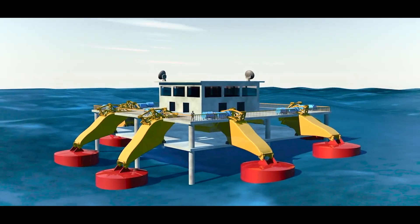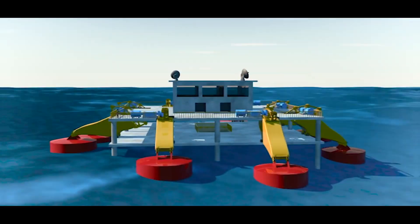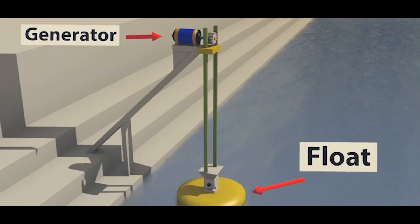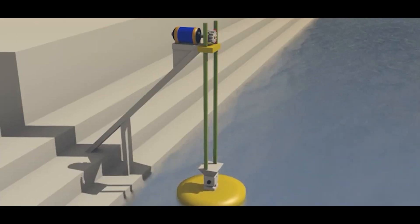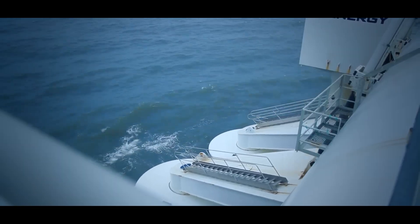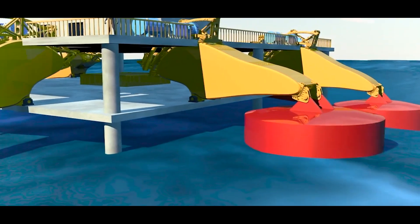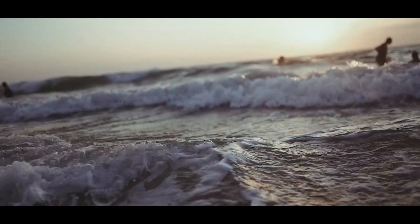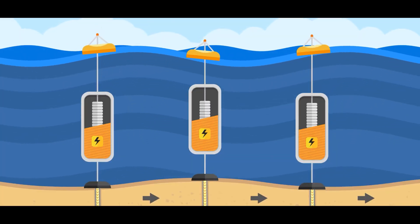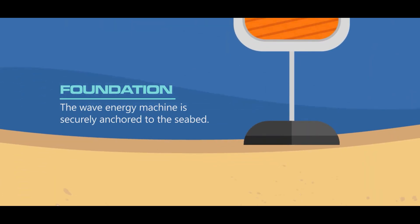The movement of the floats transfers energy to the arms, which then drive hydraulic cylinders. These cylinders pump high-pressure fluid to a central generator, ultimately producing electricity. The Wavestar's design is ingenious in its ability to generate electricity continuously, even in fluctuating wave conditions. As one float reaches the peak of a wave, another is always rising or falling, ensuring a smooth flow of energy to the generator.